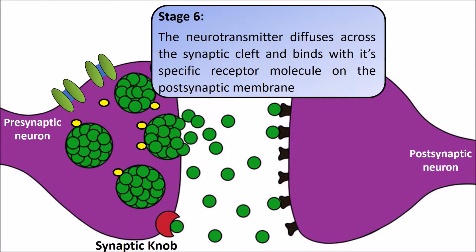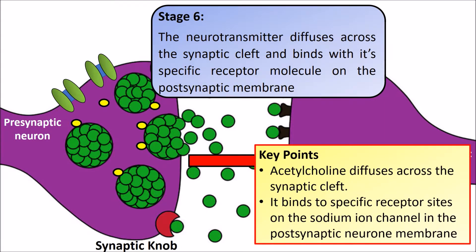The neurotransmitter diffuses across the synaptic cleft and binds to specific receptors on the postsynaptic membrane. We need to refer to the neurotransmitter as acetylcholine, which binds to specific receptor sites on the sodium ion channels in the postsynaptic membrane.